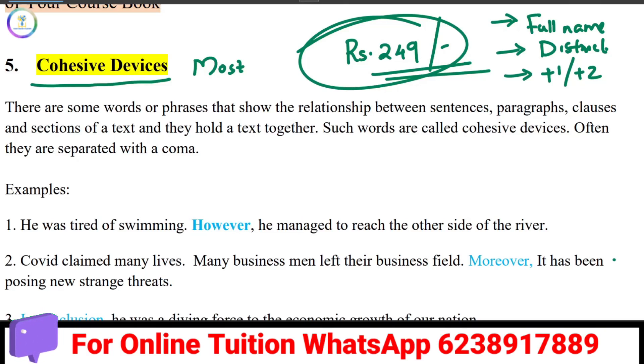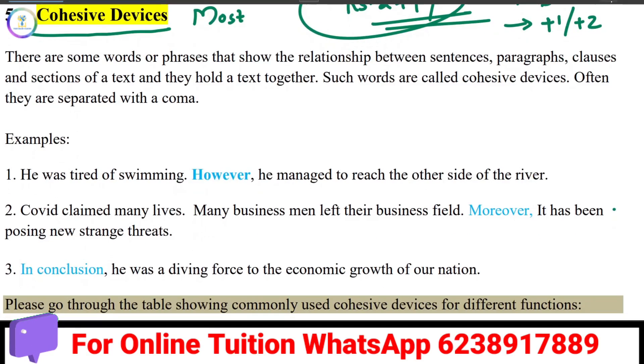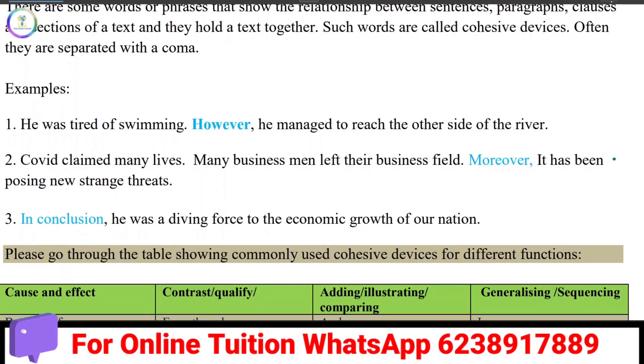So, cohesive devices. We are going to talk about how many there are. Some examples can be: He was tired of swimming.